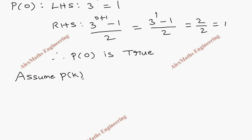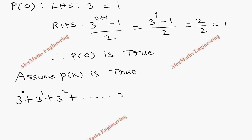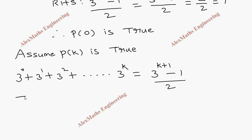Now assume P of k is true. So the series 3 power 0 plus 3 power 1 plus 3 power 2 plus dot dot dot plus 3 power k equals 3 power k plus 1 minus 1 by 2. And we have to prove P of k plus 1 is true.